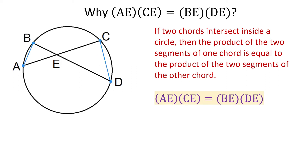Here we have the two triangles: the one to the left is triangle ABE, and the one to the right is triangle DCE. First, we need to understand that angle B in the first triangle is the same as angle C in the second triangle. They are equal because they are both inscribed angles that intercept the same arc, AD. To better understand this, let's review the definition of inscribed angles.